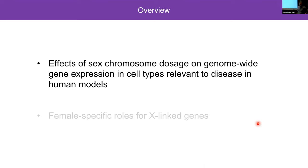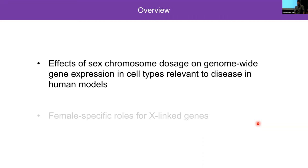For the first part of the talk, I'm going to discuss the effects of sex chromosome dosage on genome-wide gene expression in cell types relevant to human disease models. One challenge in studying the role of sex chromosomes in disease is distinguishing between sex chromosome content and hormonal effects. In mice, the four-core genotype mouse model involves breeding a male with the SRY factor on an autosome — you end up with XX females with ovaries, XY females with ovaries, XX males with testes, and XY males with testes, allowing you to separate the effects of sex chromosomes from biological sex.